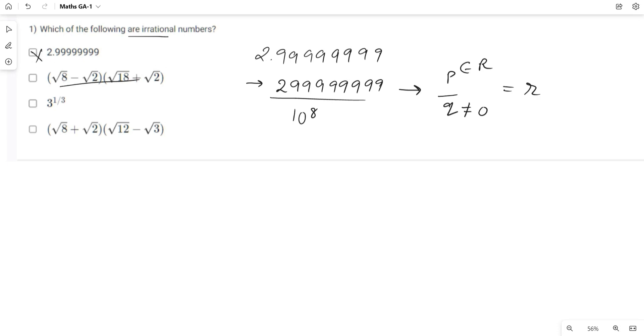Second option is an expression with roots. It is root 8 minus root 2 multiplied by root 18 plus root 2. On simplifying, we get root of 8 times 18 plus root 16 minus root 36 minus root 2 squared. This 18 times 18 is 144, plus root 16 minus root 36 minus 2.